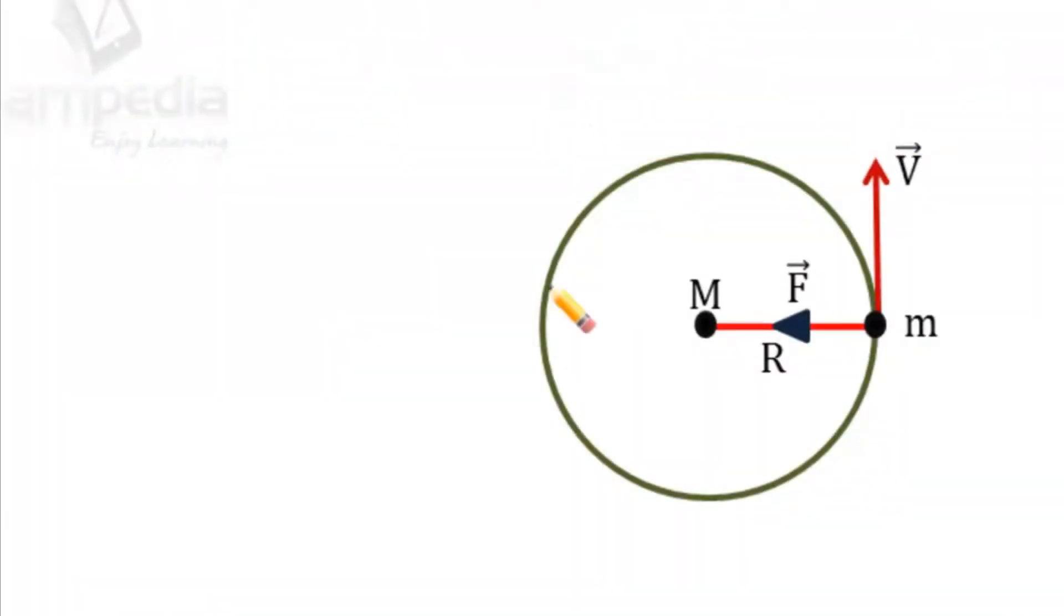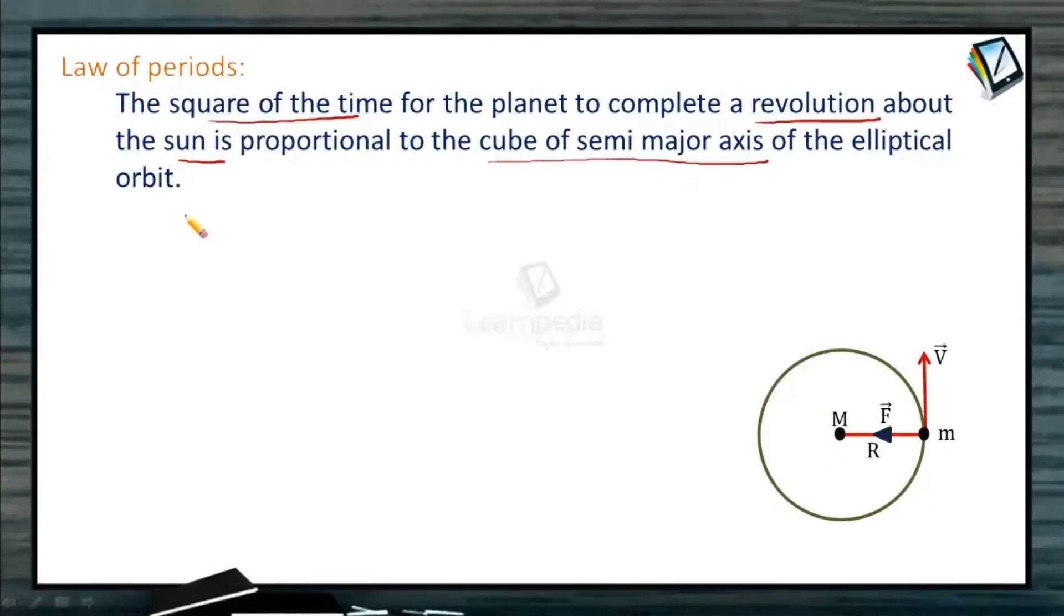Now suppose this orbit is an elliptical orbit, and a planet of mass m is revolving around the Sun of mass capital M. Since the planet is rotating in a circle, we can say that gravitational force is responsible for the body to move in a circle.